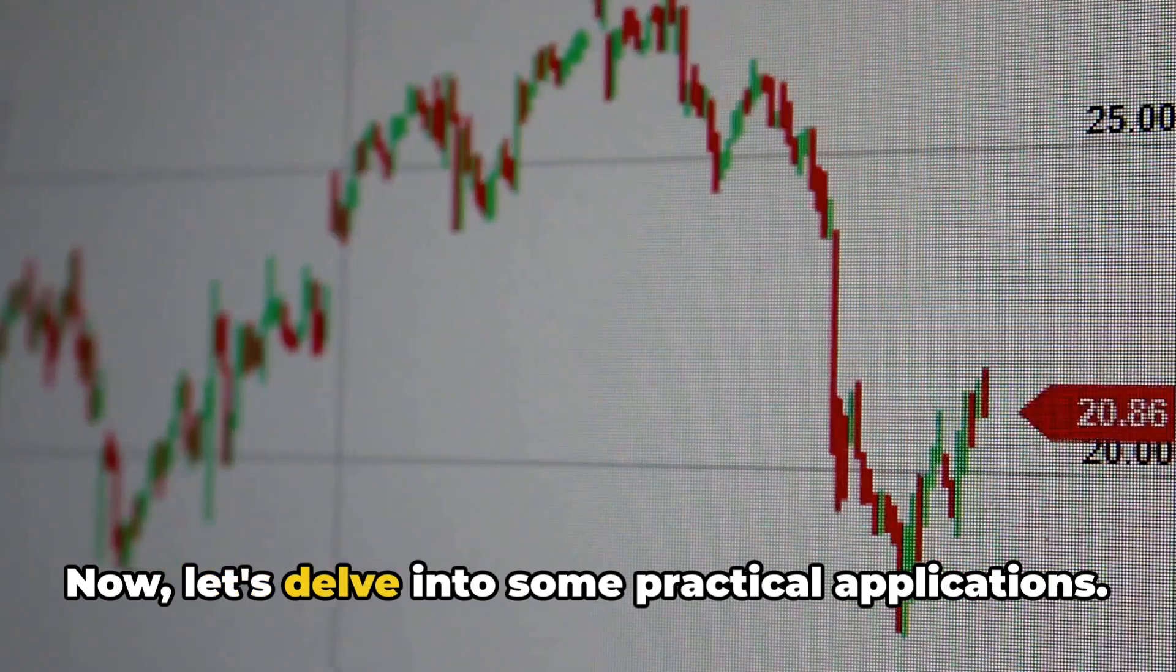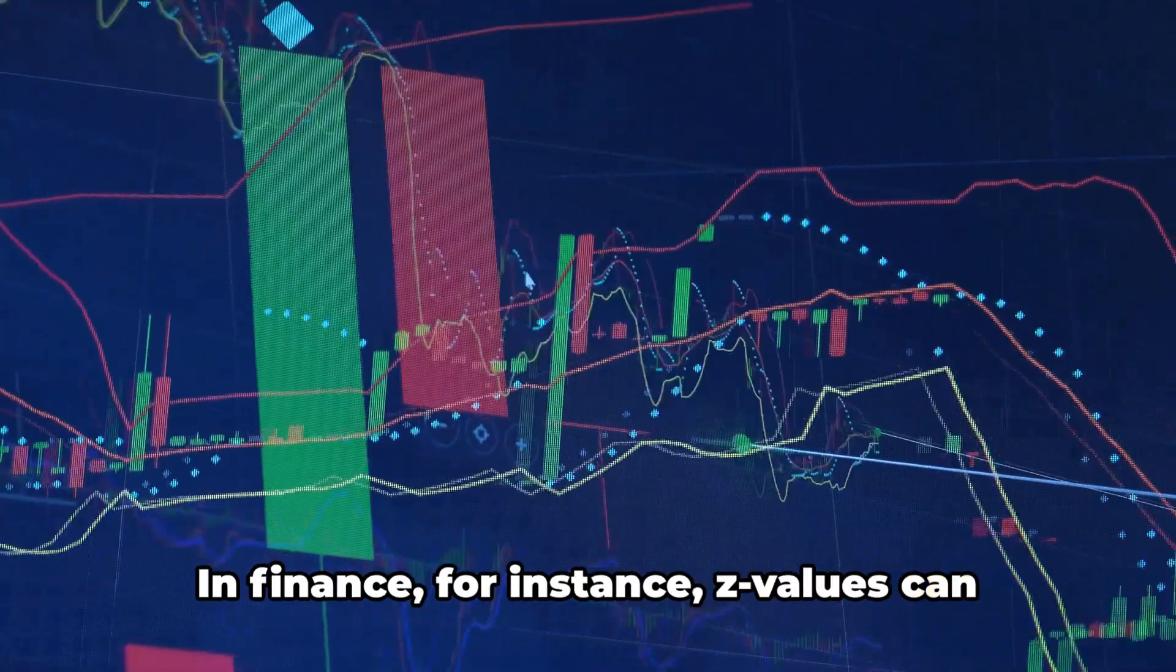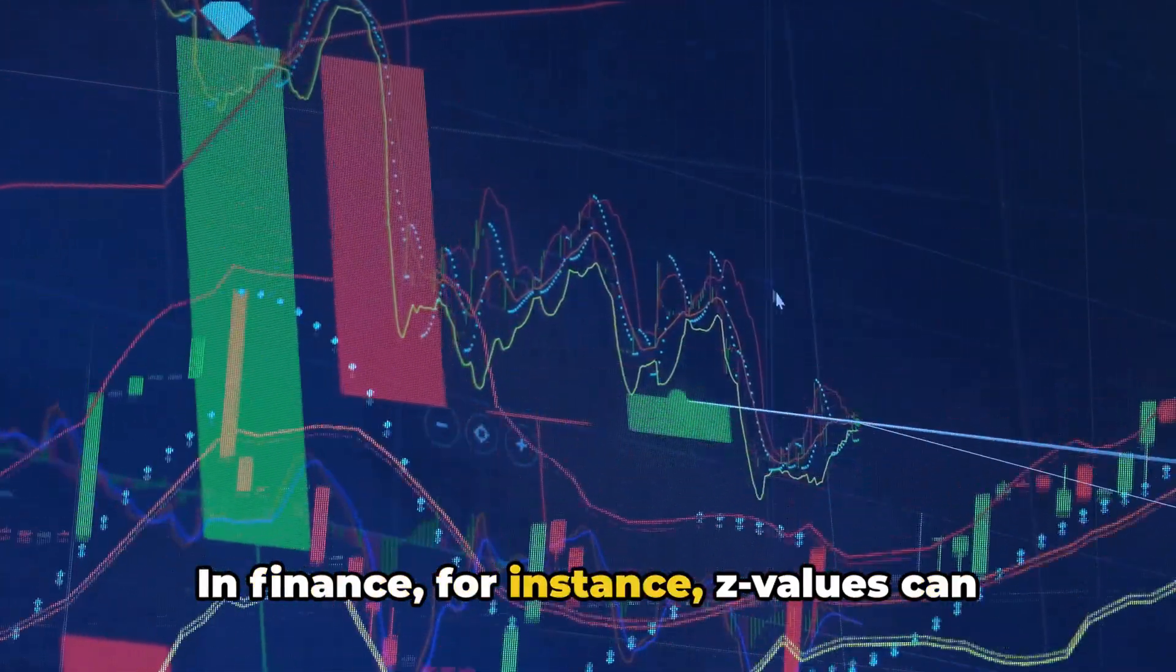If a player is two standard deviations taller than the average, their z-value would be plus two. This simple number gives us a clear picture of how unusual or typical their height is compared to the group.